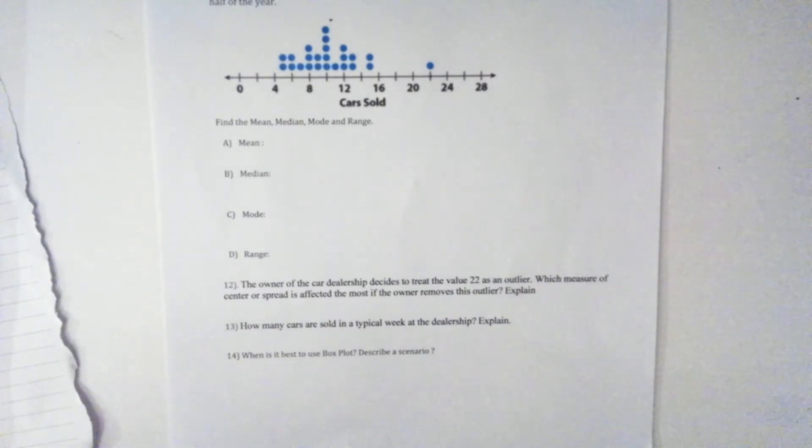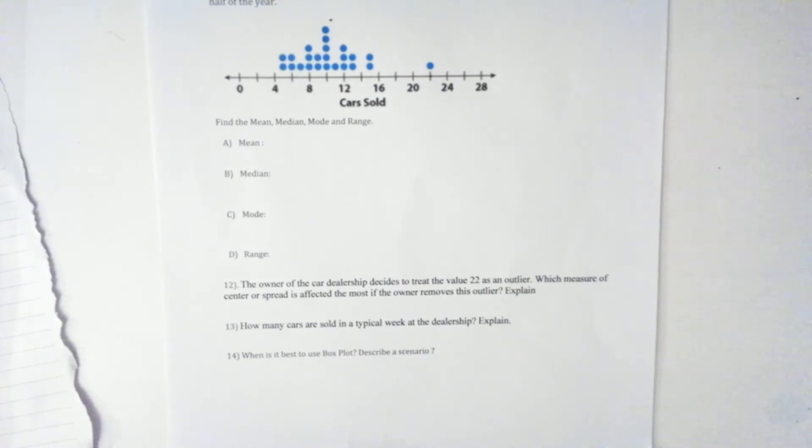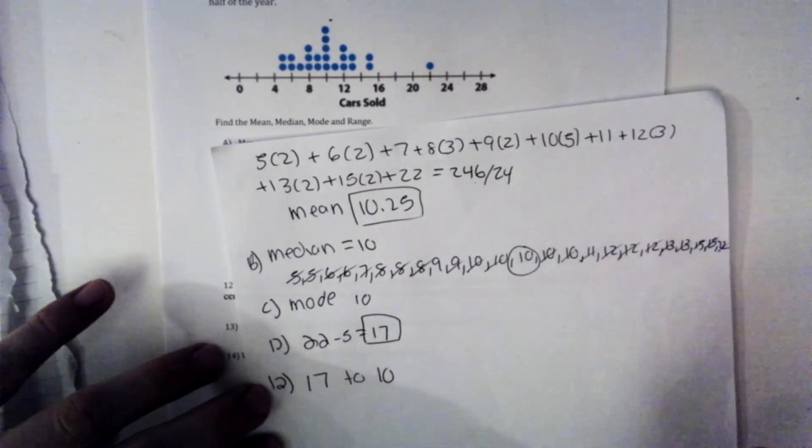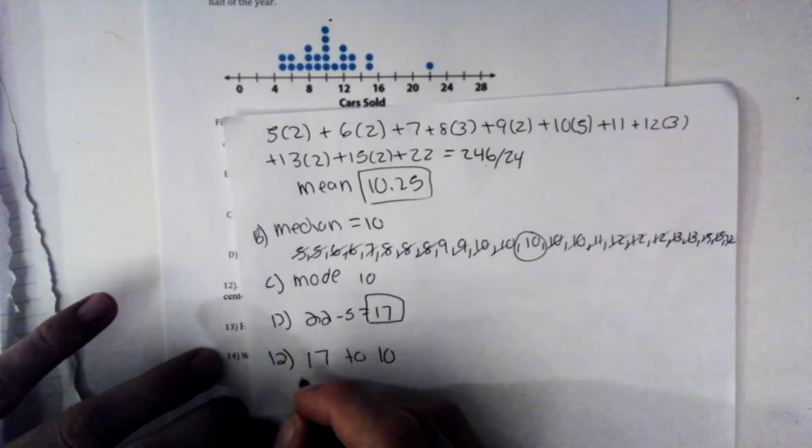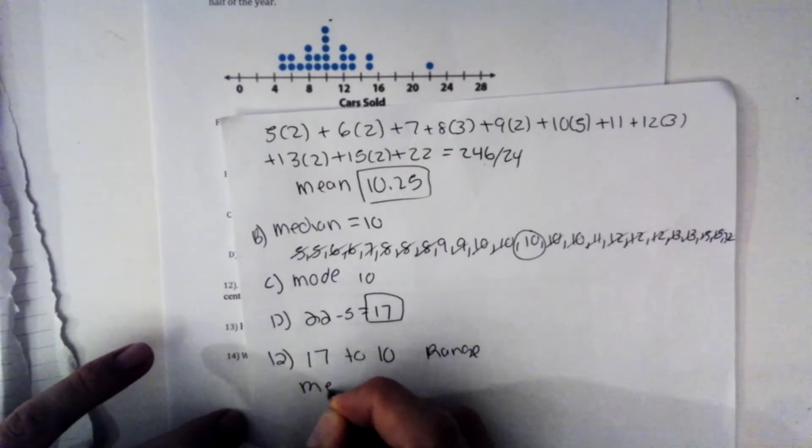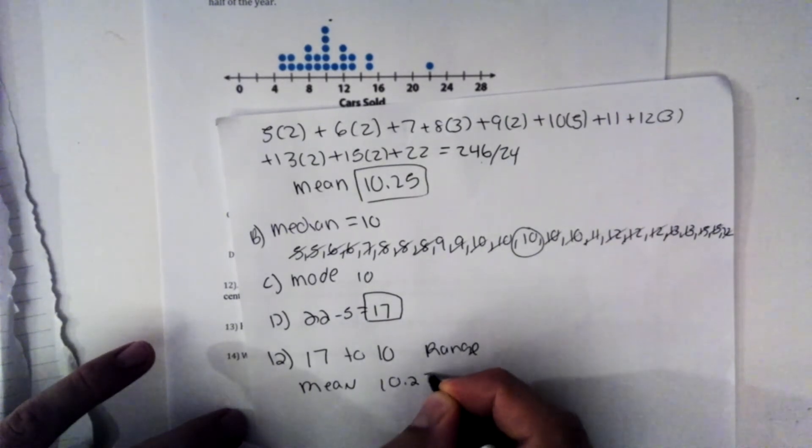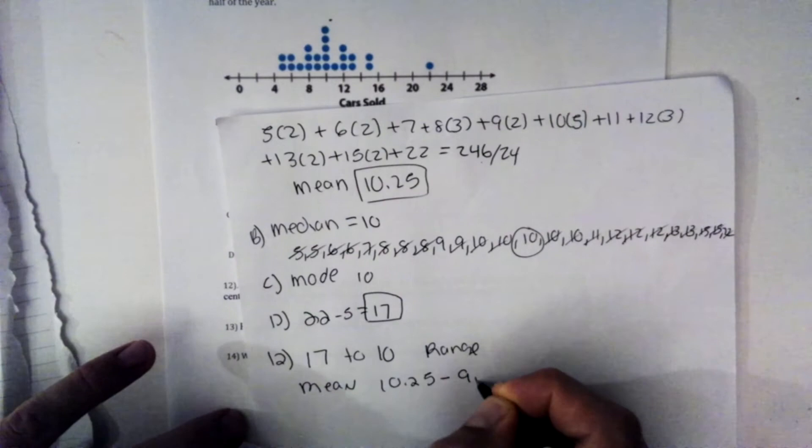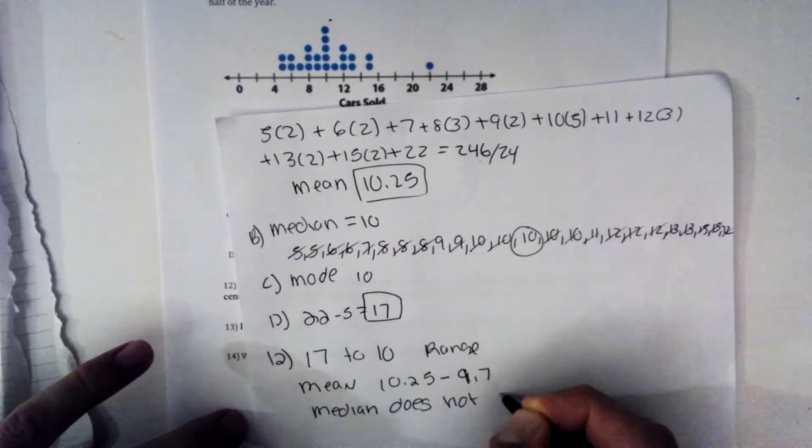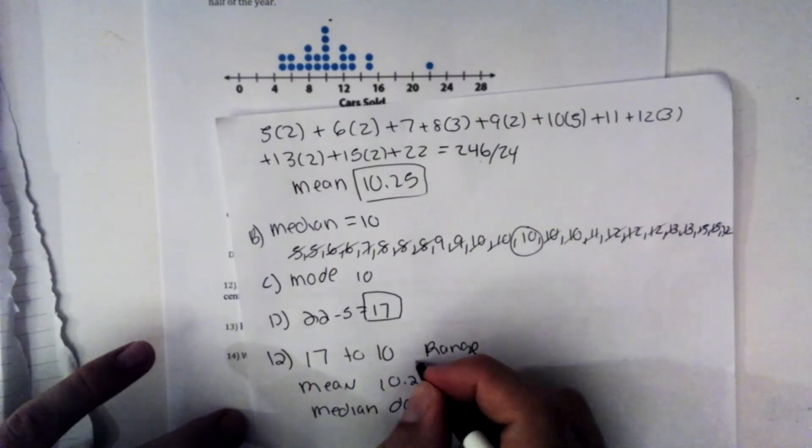12 asks, if the owner of a car dealership decides to treat the value of 22 as an outlier, which measure of center or spread is affected the most if the owner removes the outlier? So we're getting rid of 22. Well, let's say that we change our range here from 17 to just 10. That's a huge change. Doing some quick math, I see that that's for the range. I see that the mean goes from 10.25 to only about 9.7. And the median does not change.